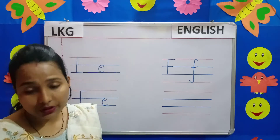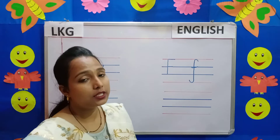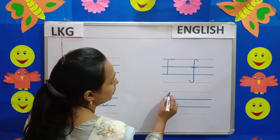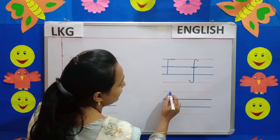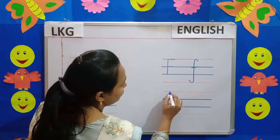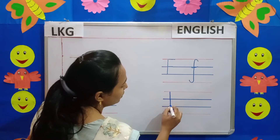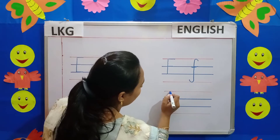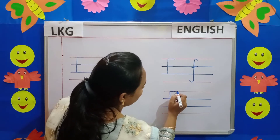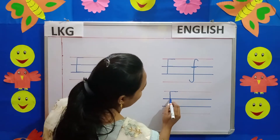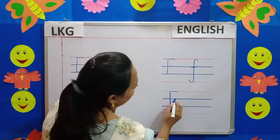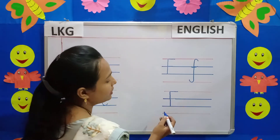Now I will teach you the formation of this letter. Follow me on the board. Now when you write in your workbook, you can see the red line over here. Place your pencil here and make a straight line, come down and touch this blue line. Place your pencil here on the red line and draw a line towards the side. Again place your pencil here in the middle of the blue line and draw a small straight line towards the side. So you have written capital letter F.